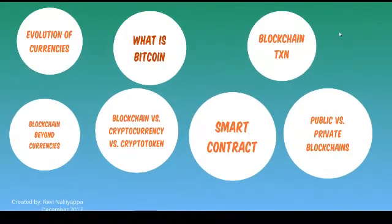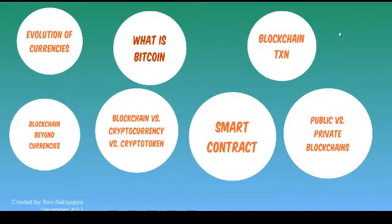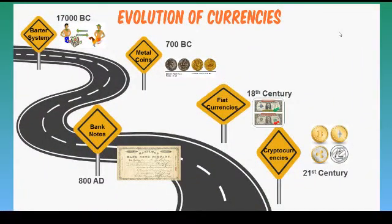This presentation has two parts. Part 1 starts with the evolution of currencies, goes into the detail of what a Bitcoin is, its characteristics, the technology it uses, and ends with a view of a blockchain transaction. Part 2 goes into the details of blockchain beyond cryptocurrencies, such as smart contracts, private blockchain, etc. To keep this recording at a consumable length, I will focus only on Part 1. So let's jump in, starting with the evolution of currencies.